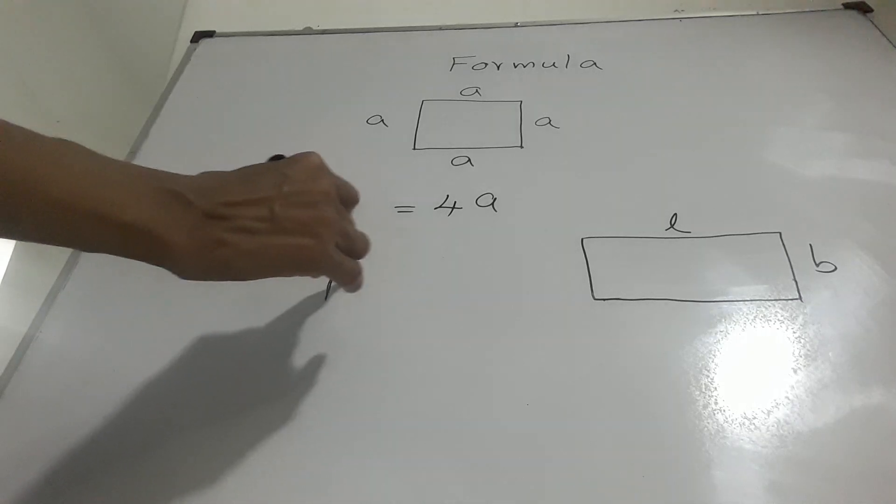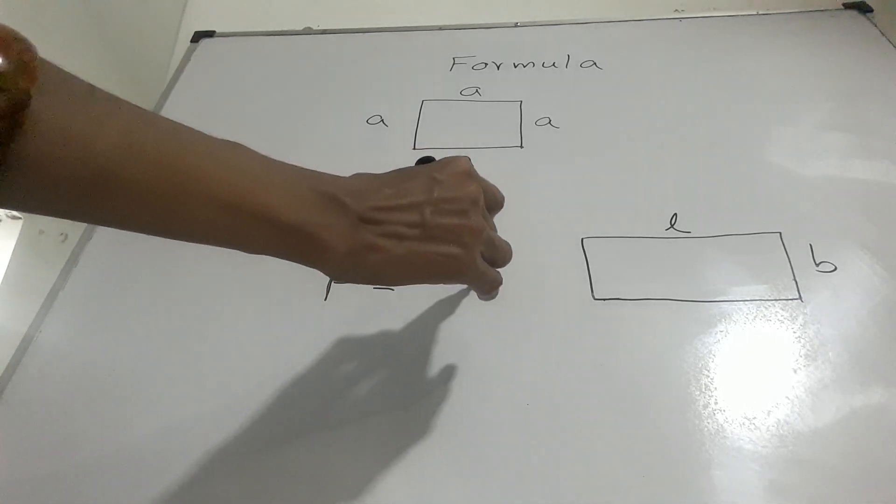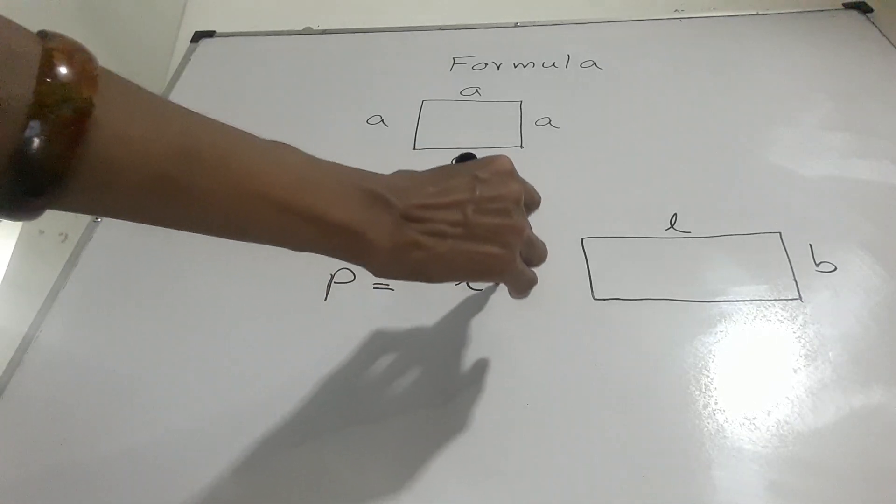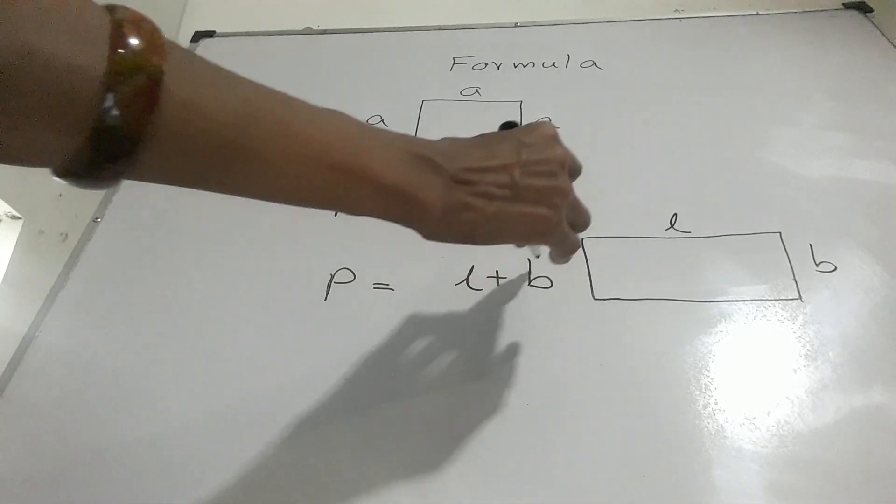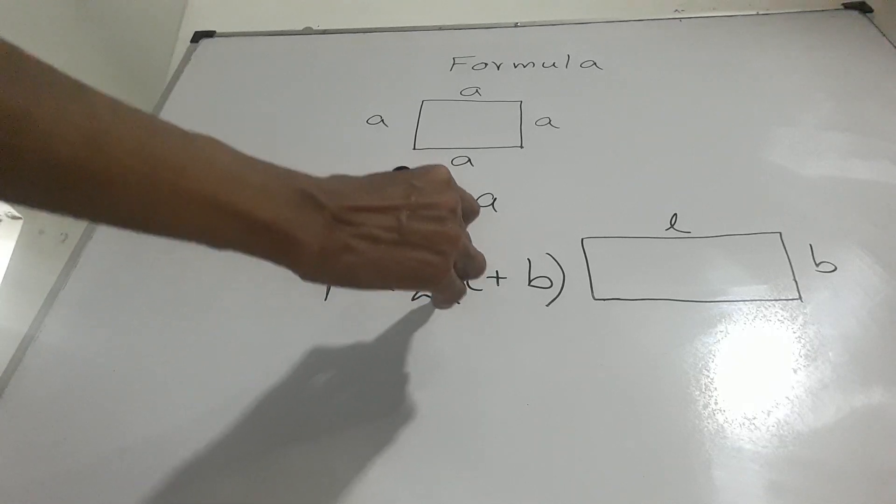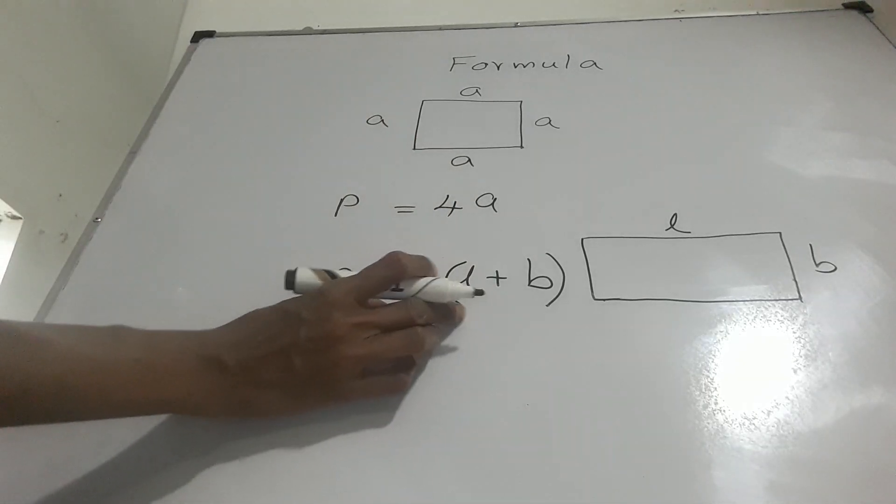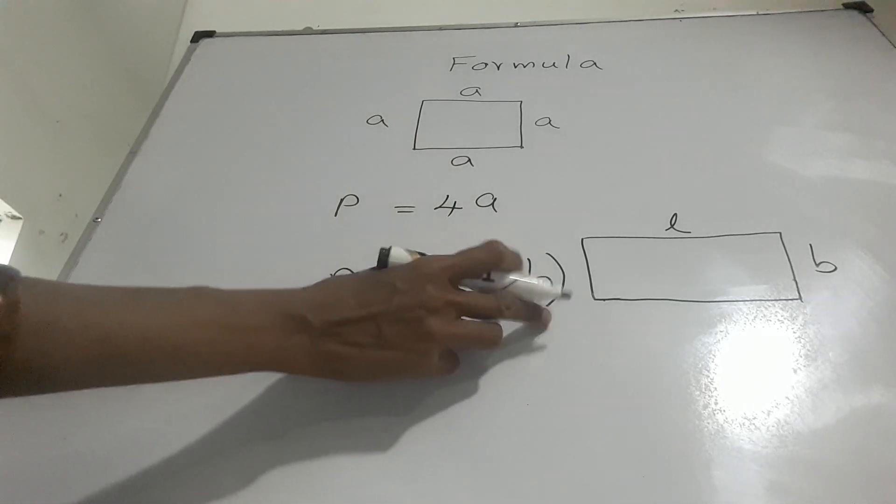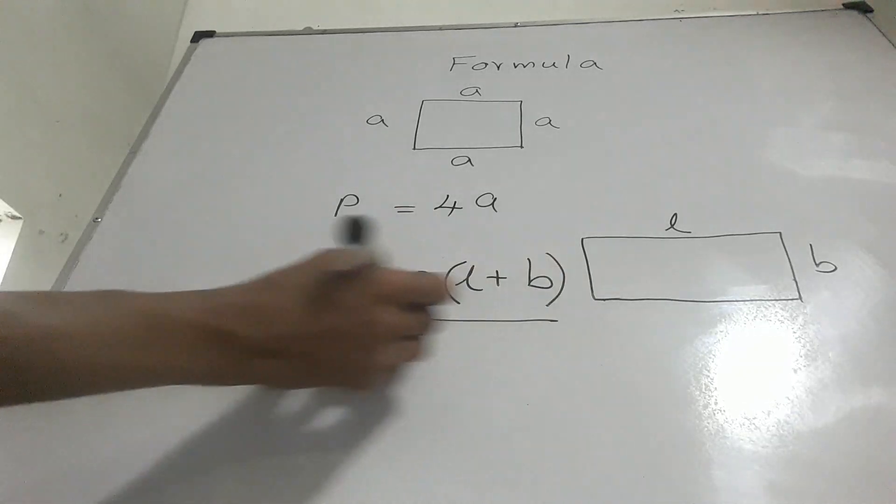Now perimeter is equal to length plus breadth, and we multiply it by 2. 2 times length plus breadth. This is the formula.